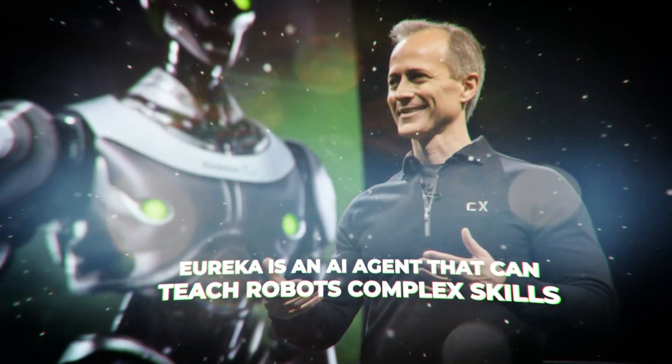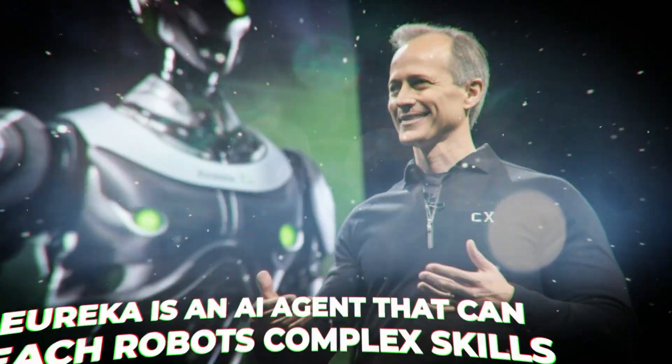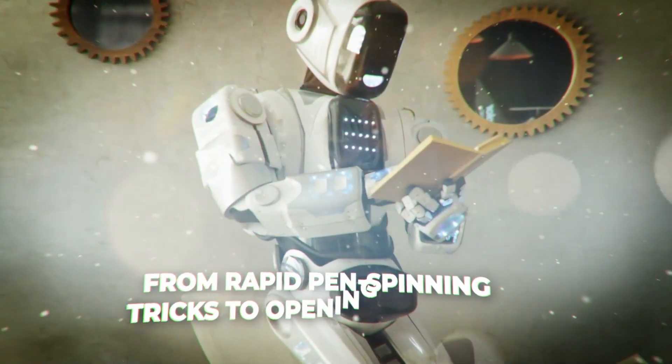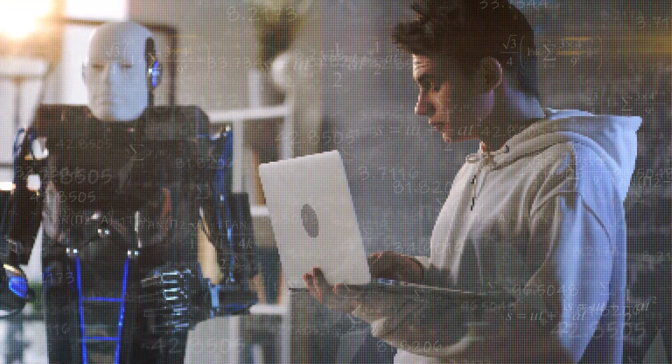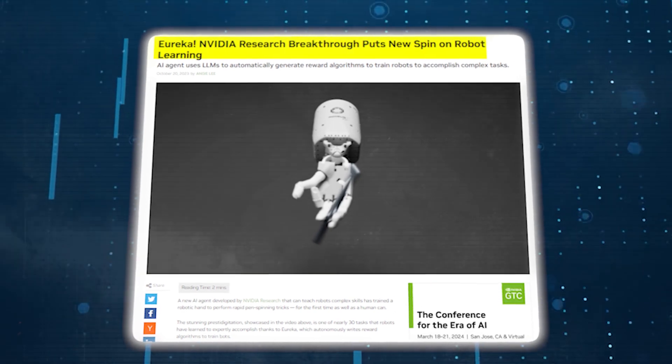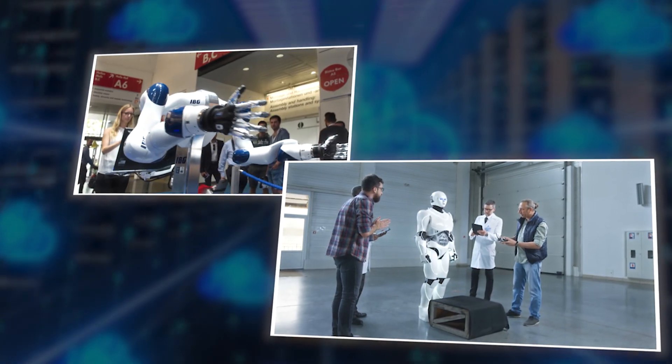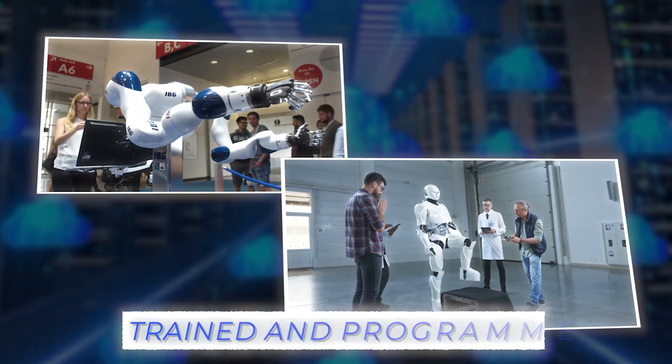Eureka is an AI agent that can teach robots complex skills, from rapid pen spinning tricks to opening drawers. This breakthrough in AI-driven robot learning is a significant development in the field of robotics, with the potential to revolutionize the way robots are trained and programmed.